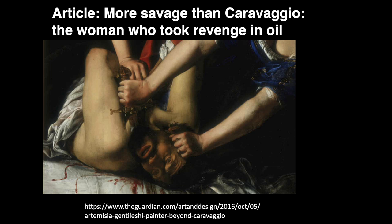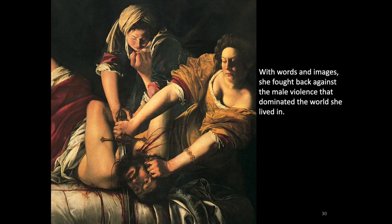The dying man is Holofernes, an enemy of the Israelites in the Old Testament, and the young woman beheading him is Judith, his divinely appointed assassin. Yet at the same time, he is also an Italian painter called Agostino Tassi, while the woman with the sword is Artemisia Gentileschi, who painted this — it is effectively a self-portrait. The resulting rape trial against Agostino Tassi lasted seven months, and every word of this court case survives. Yet Gentileschi was tortured and Tassi was set free — protected by the Pope.